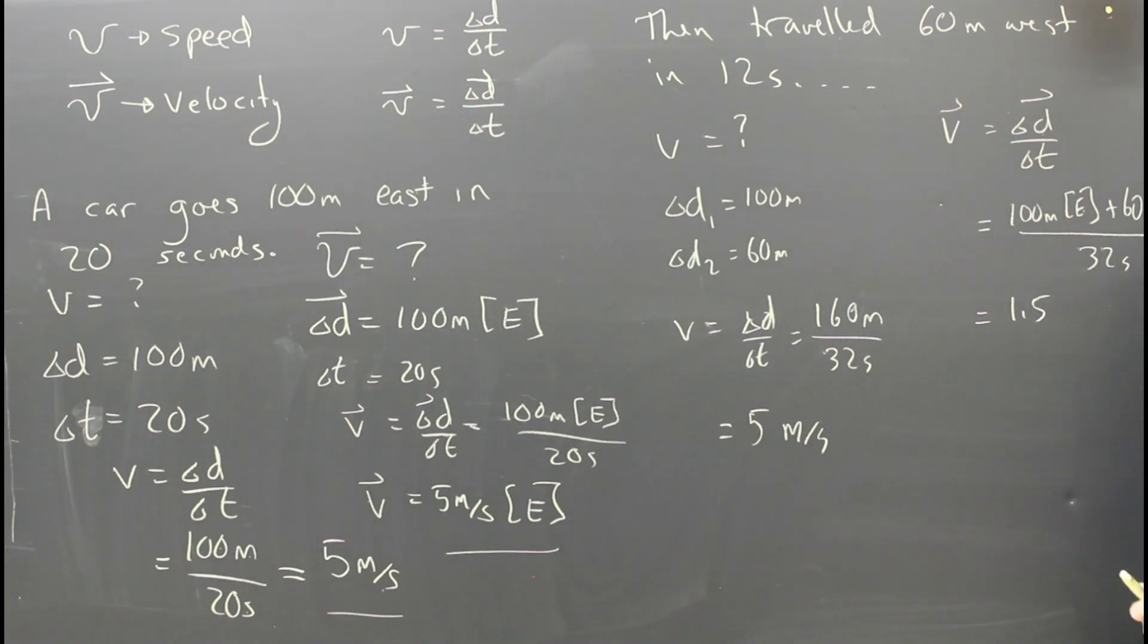1.5. 40, 32 goes into one, leaves 8. 40 divided by 8 is 0.5. 1.5 meters per second. 100 east plus 60 west gives us 40 east. If you don't know how to do that, go back to the last video on position and displacement. 1.5 meters per second east.